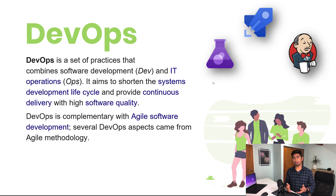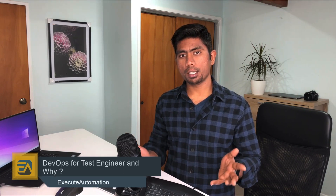DevOps is complementary with agile software development — several DevOps aspects came from agile methodologies. Agile methodology is getting popular and a lot of people are working with agile in one way or another, like Scrum or XP or scrum-based workflow. The essence of agile itself is to make things faster, complete things quickly, not compromise on software quality, and release software in smaller chunks. DevOps plays a super important key role in achieving all these things.